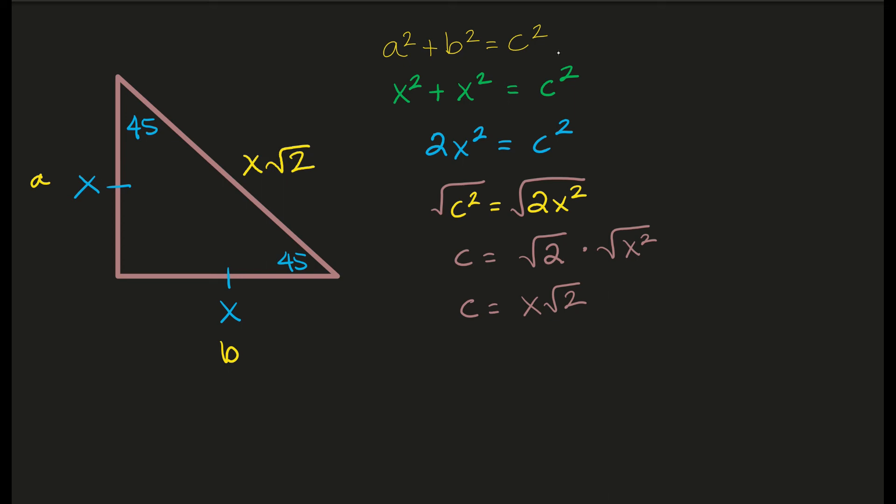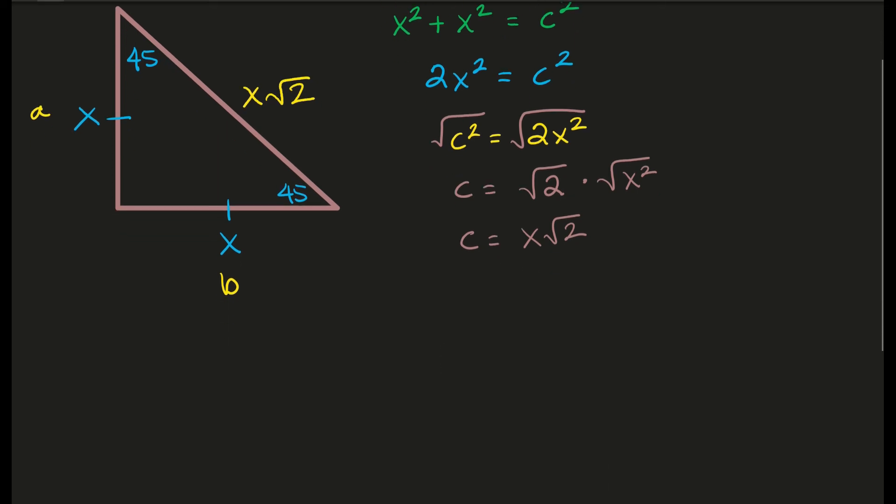So this is where the rule comes from. And you can prove this plugging in any number for x. So for a demonstration, let's just try 5. Let's say x here was 5. So I have 5 squared plus 5 squared equals, and we'll still say c squared.